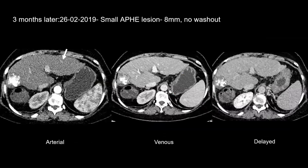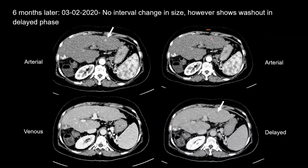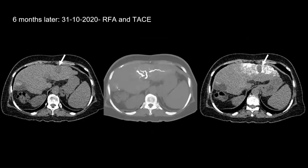On follow-up, this patient developed a small arterial phase hyperenhancing lesion in the left lobe; however, there was no washout seen, so the patient was kept on follow-up. Subsequent follow-up showed a mild increase in size, still less than one centimeter with no washout. A later follow-up showed the appearance of washout in the lesion, confirming it was hypervascular. The right lobe treated lesion looked good. At this point, radiofrequency ablation was done along with transarterial chemoembolization. The first image shows the ablated area and the last shows the deposition of lipiodol around the lesion.